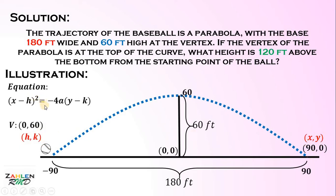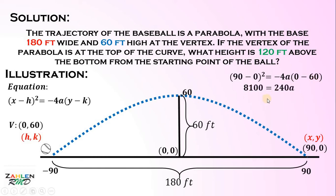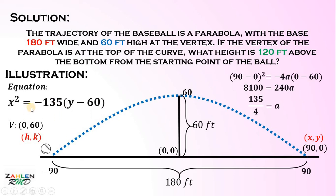Substitute all the given values to our equation and solve for a. We get 90 minus 0 squared equals negative 4a multiplied by 0 minus 60. Simplifying: 8,100 equals 240a. Dividing both sides by 240, we get a equals 135 over 4, which is the focal length of this parabola. Substituting a, h, and k into the equation, we get x squared equals negative 135 multiplied by y minus 60. This is the equation of the parabola with vertex at 0, 60, passing through negative 90, 0 and 90, 0.